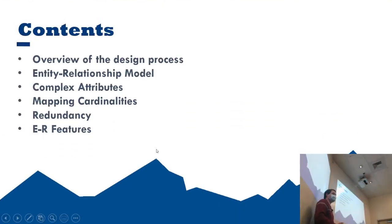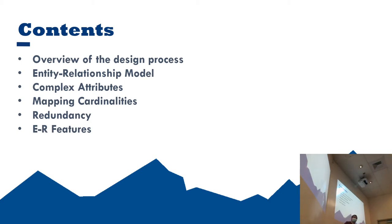The specific topics we'll be talking about today are going to be an overview of the design process, the entity relationship model, complex attributes, a little bit about different cardinalities, removing redundancy — and we'll cover that more in chapter seven when we get to normalization — as well as ER features.